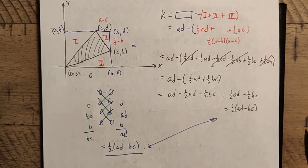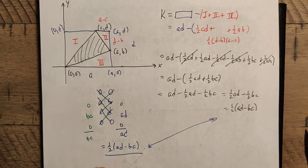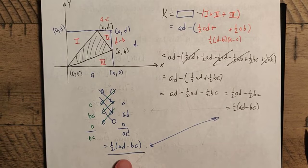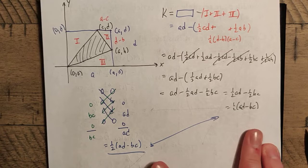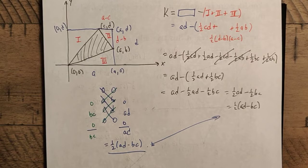Now, how did I know ad was bigger than bc? I didn't. Even if we switched the order and got ½(bc − ad), that's just the negative of our result. Since we want area to be positive, we simply take whichever of (ad − bc) or (bc − ad) is positive — that is, we take the absolute value. So this still works for the general triangle.